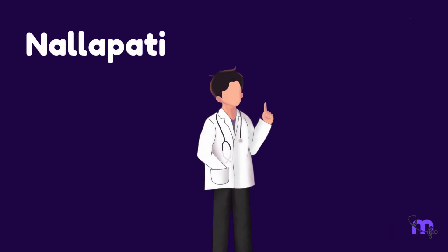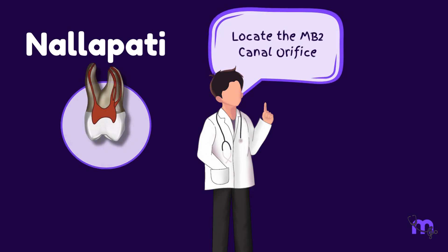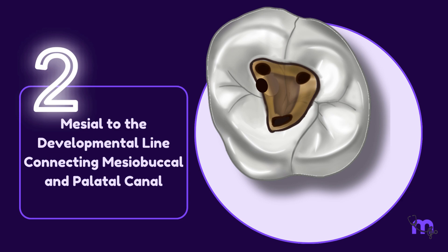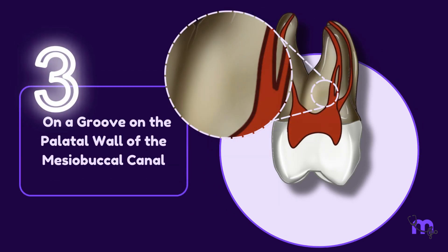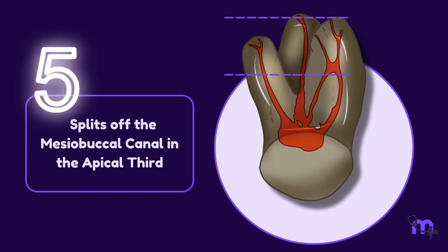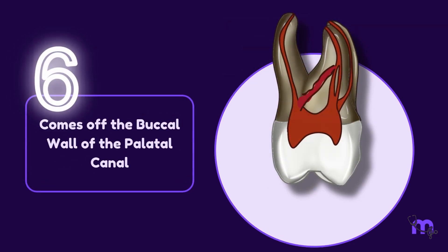Nalapatti provided the possible areas where we can locate the MB2 canal orifice. It can be present on a groove on the palatal wall of the mesiobuccal canal; splits off the mesiobuccal canal in the middle third; splits off the mesiobuccal canal in the apical third; or comes off the buccal wall of the palatal canal.